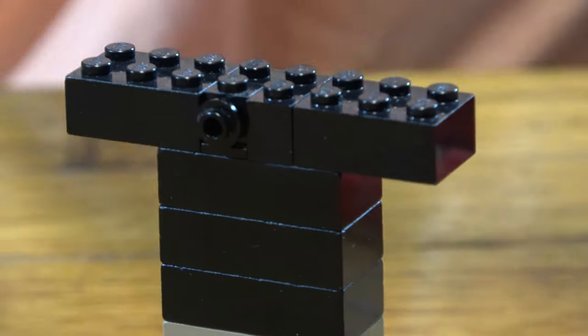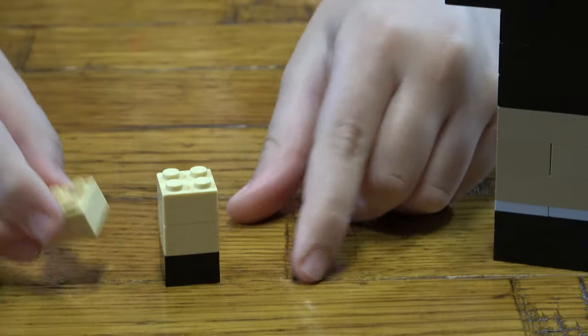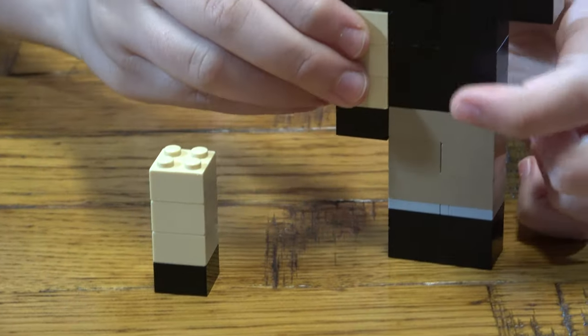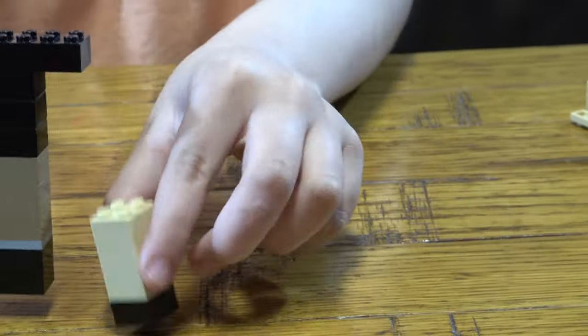And we make the arms. We get three of these and one of those black ones, and we make another one. Place it there like so, really easy.